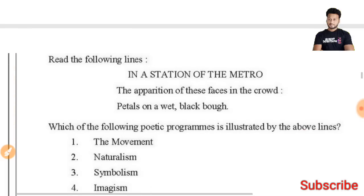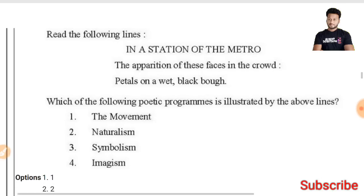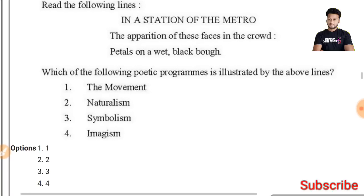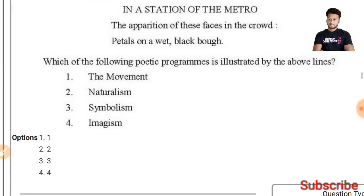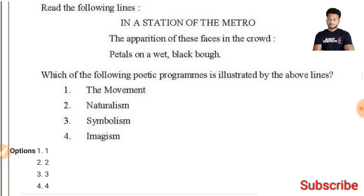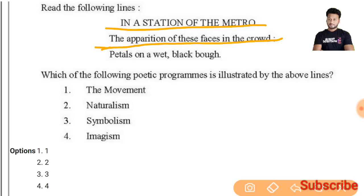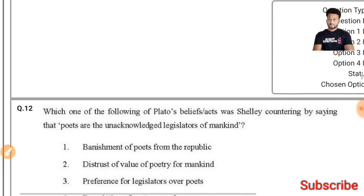Question 11: Read the following lines from 'In a Station of the Metro' — this poem is by Ezra Pound, who is basically known for his Imagism. The lines read: 'The apparition of these faces in the crowd; Petals on a wet, black bough.' The poetic technique used here is Imagism — the fourth option is the right answer.